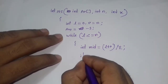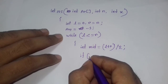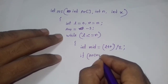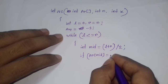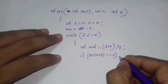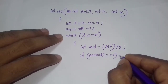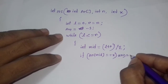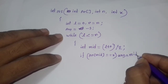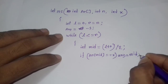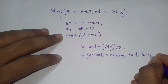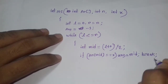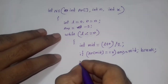We check if arr[mid] equals x. If so, we set answer equal to mid and break out of the loop. This handles the case where the element is exactly at the mid index.